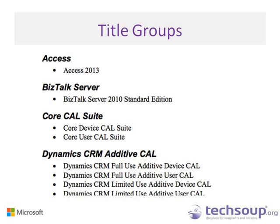Rose was wondering, beyond Get Genuine, is there another way to get an operating system? Microsoft allows us to offer both the Get Genuine licensing and the upgrade product for operating systems. If you have an existing Microsoft OS — say XP or Vista — and want to upgrade to Windows 8 or 7, those upgrade products are available in the Title Groups list.